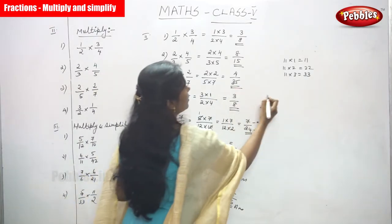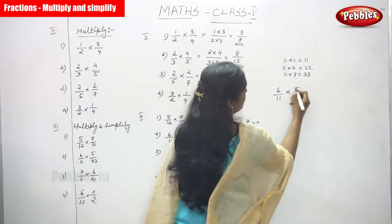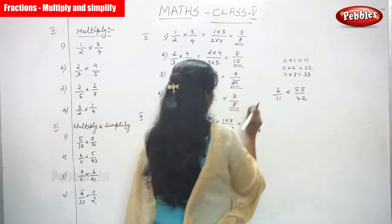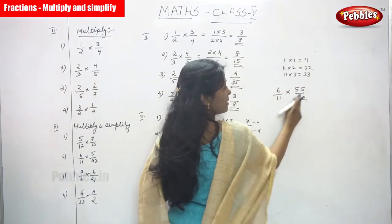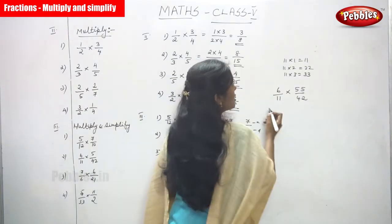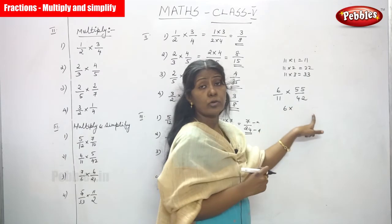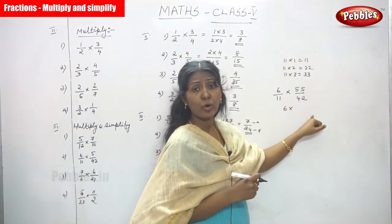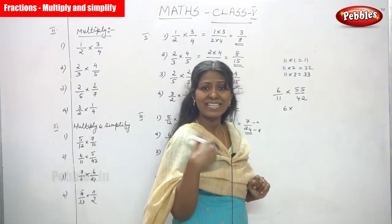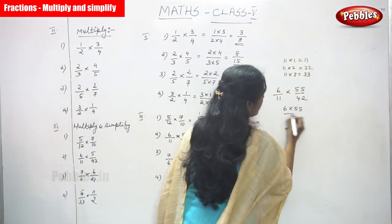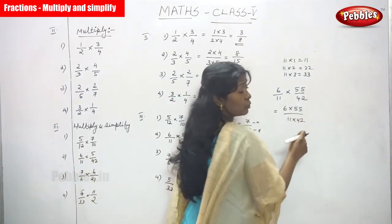Now I want to show a sum similar to the second sum but with one difference. Here we have 6/11 multiplied by 55/42. Note that 6/11 is a proper fraction because numerator is less than denominator, while 55/42 is an improper fraction because the numerator is greater than the denominator. We write 6 × 55 divided by 11 × 42.